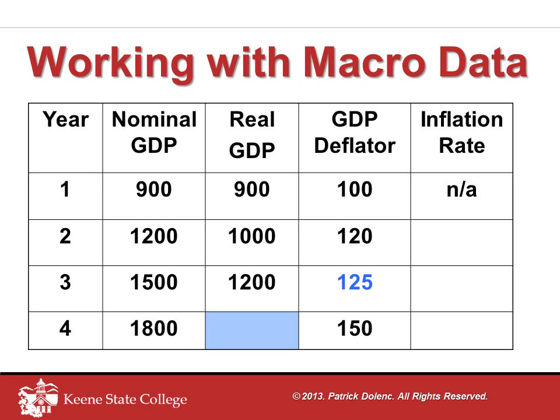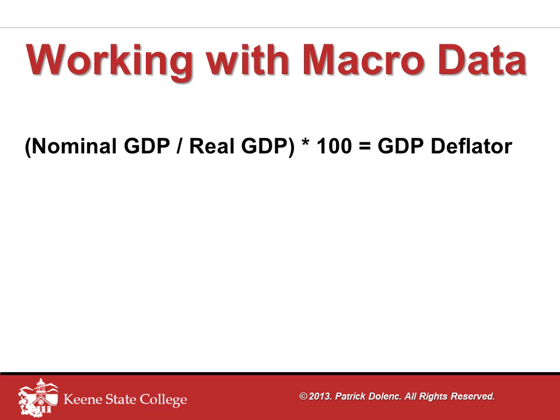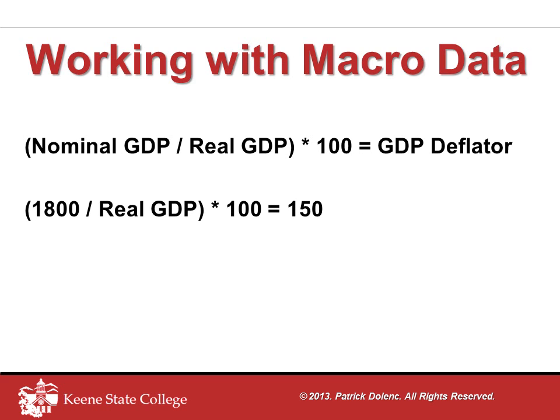Returning to the table, we plug in the 125 value that we just calculated, and now we're going to solve for that year 4 real GDP cell that's been highlighted. Once again, using the relationship: nominal GDP divided by real GDP times 100 equals the deflator. This time, we have a nominal GDP value of 1800, and we know the deflator value is 150, so we're going to solve for real GDP.